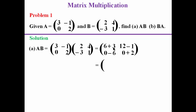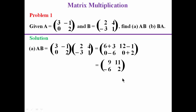We now simplify to give us the final result for the product of A and B: 6 plus 3 gives 9, 12 minus 1 gives 11, 0 minus 6 gives negative 6, 0 plus 2 gives 2. So AB gives row-wise: 9, 11, negative 6, 2.